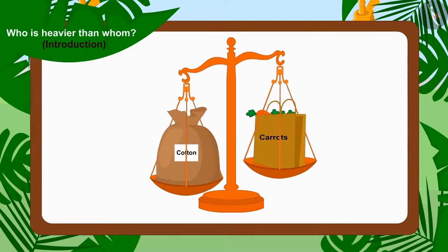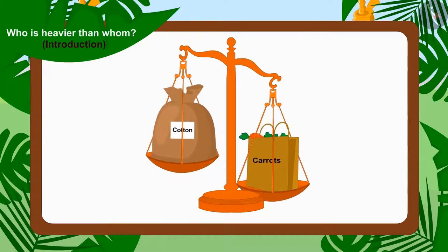Well done children, you have found the right answer. The weighing scale tipped towards Bunny's carrot bag. That is why Bunny's carrot bag is heavier than Bhola's bag full of cotton.